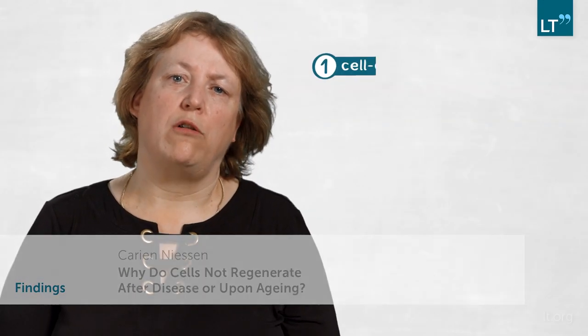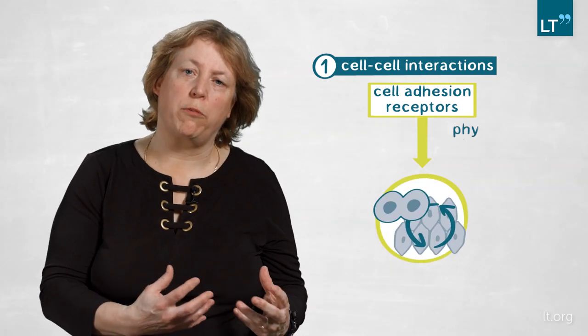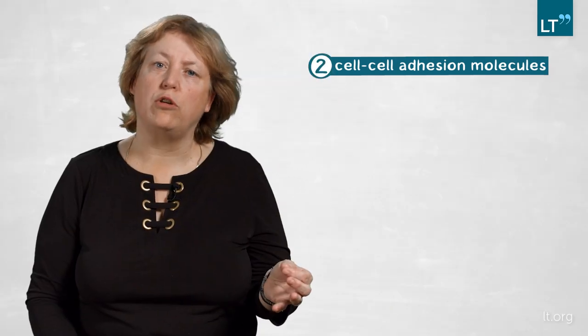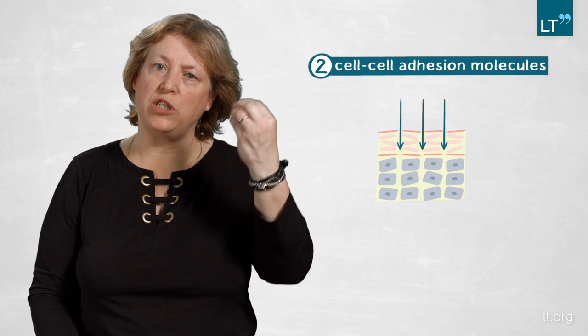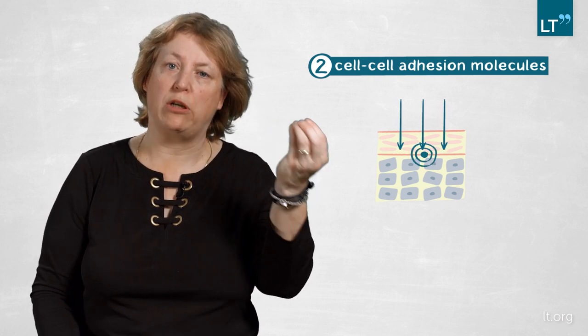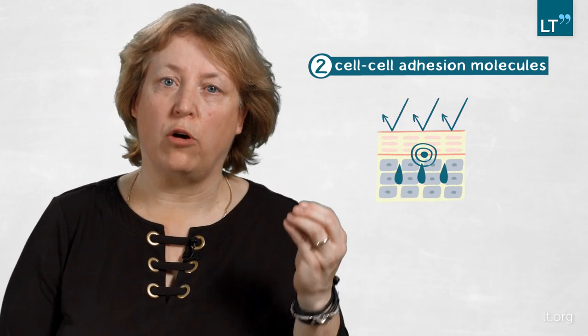By combining these physical, mechanical, and cell biology approaches we have found three main findings. First, we now better understand how cell-cell interactions through cell adhesion receptors actually allow cells to divide and renew the tissue by altering physical as well as chemical properties. Second, we now know that these cell-cell adhesion molecules integrate both force cues and biochemical cues, and that allows cells to position the barrier exactly where it's functionally required in the tissue to prevent water loss and help combat infections and other outside insults.